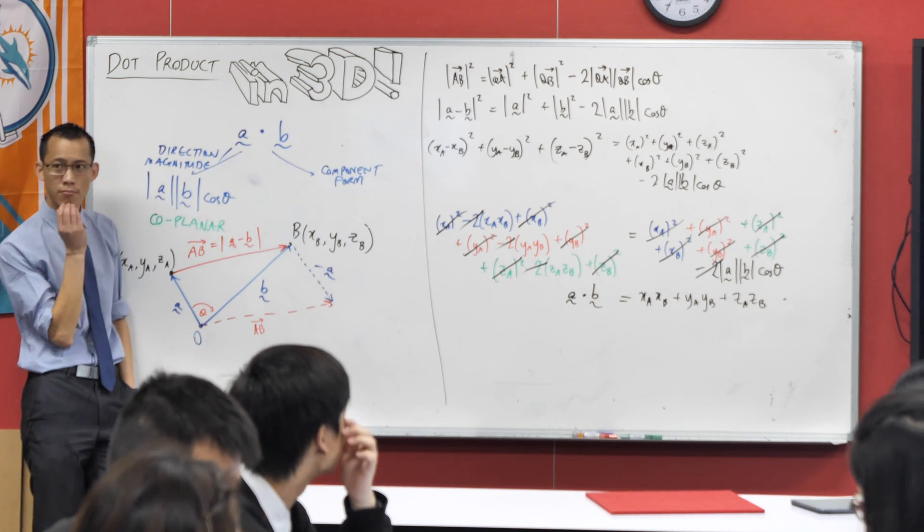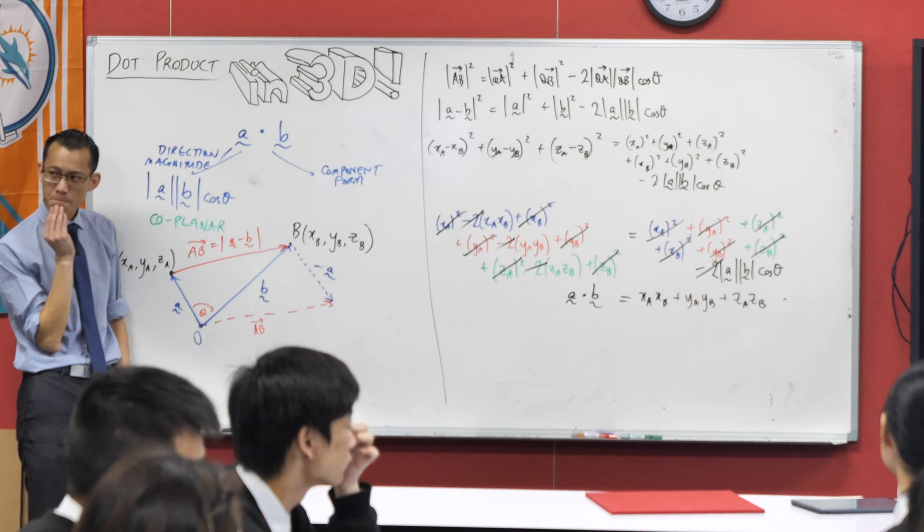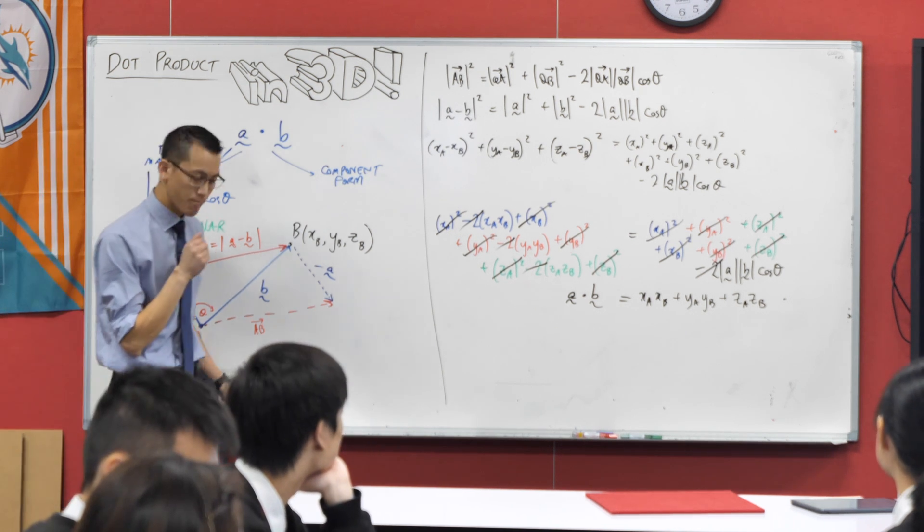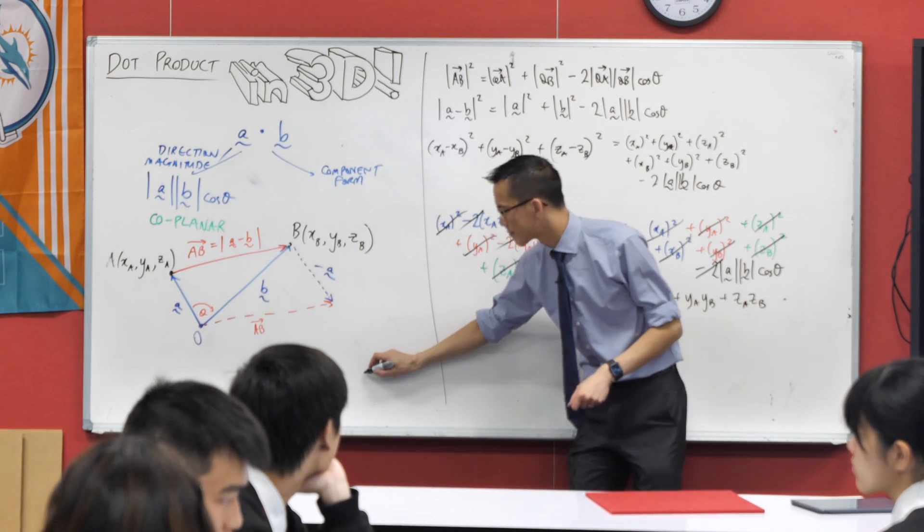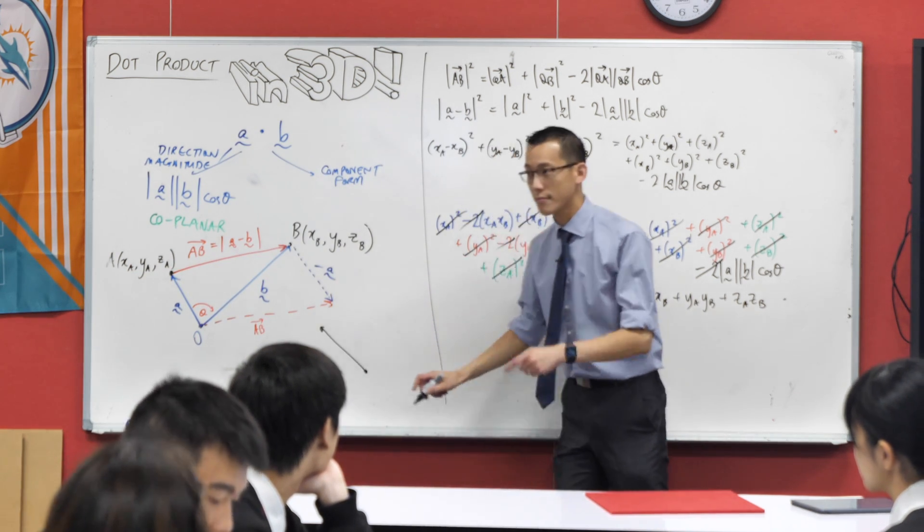Someone tell me why this has to be a 3D question, not just because it's i's, j's, k's. Why is there no equivalent question in 2D? Any takers? Read the wording of the question. Think about this. What are you thinking, Ren?